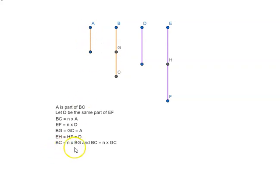So we can say BC is equal to n times BG and BC is equal to n times GC. Similarly, we can say EF is equal to n times EH and EF is equal to n times HF.